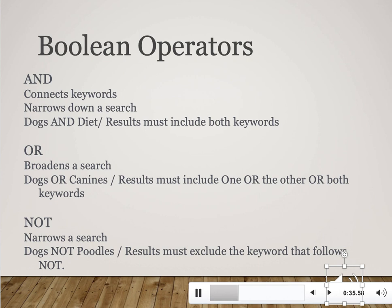AND connects keywords together and narrows down a search. For example, you could search for 'dogs AND diet,' and the results would be about the best types of diets for dogs. AND basically tells the library catalog it can only bring back results that list both of your keywords.